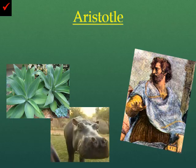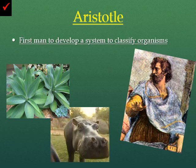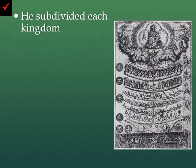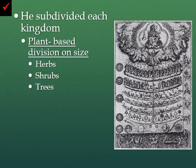The first one to ever go ahead and start to classify organisms was Aristotle — a philosopher who was the first man to develop a system to classify organisms. He broke these up into two separate kingdoms: plants and animals. He subdivided each of these kingdoms. Plants were based upon their division of size — so you had the small plants, the herbs, the medium-sized plants, the shrubs, and the tall ones, which were the trees.